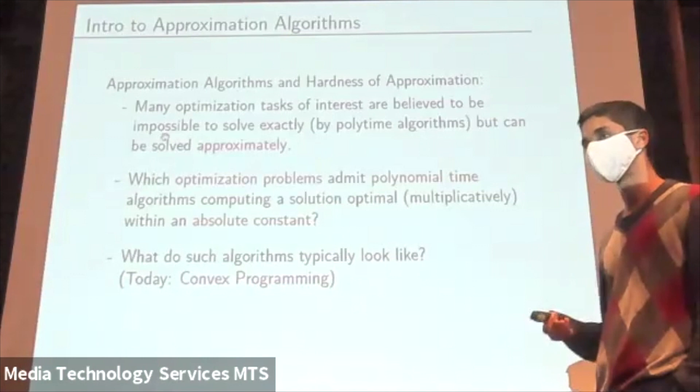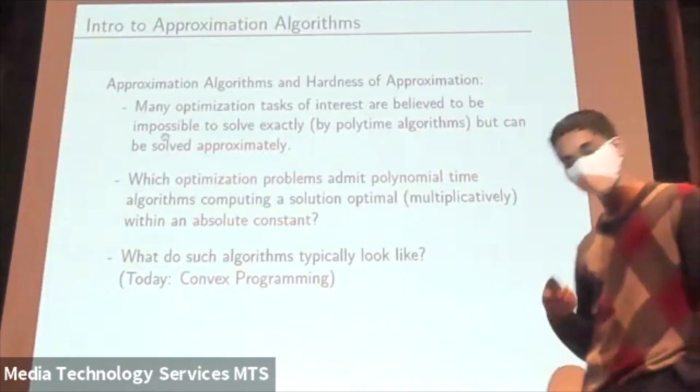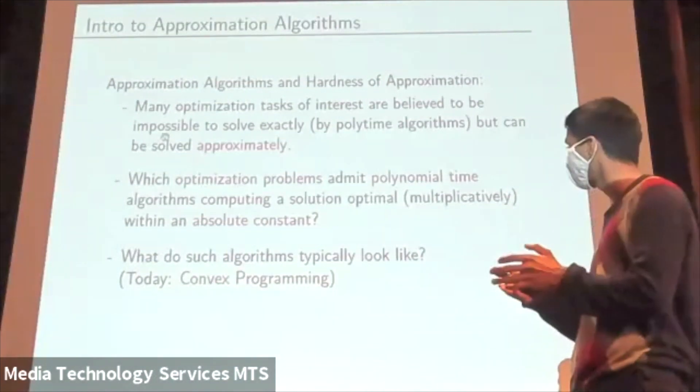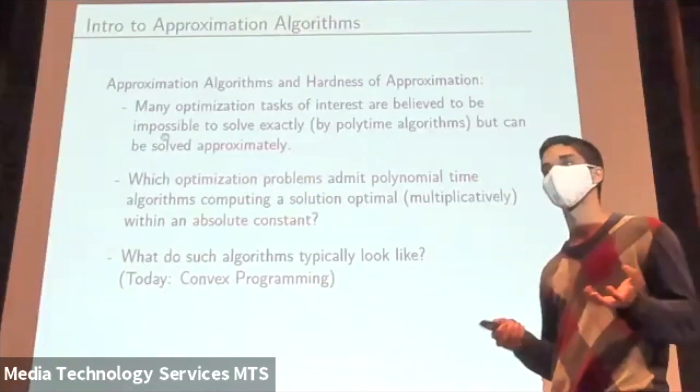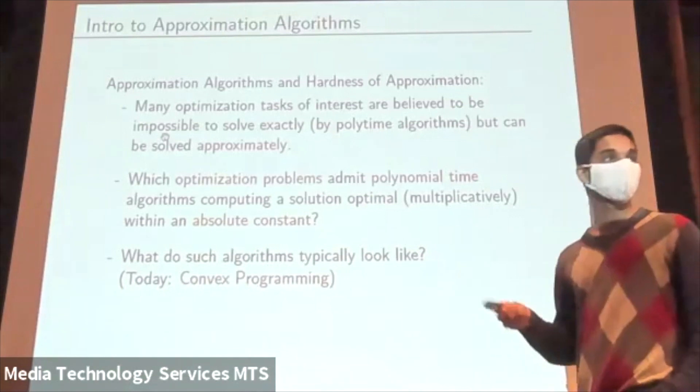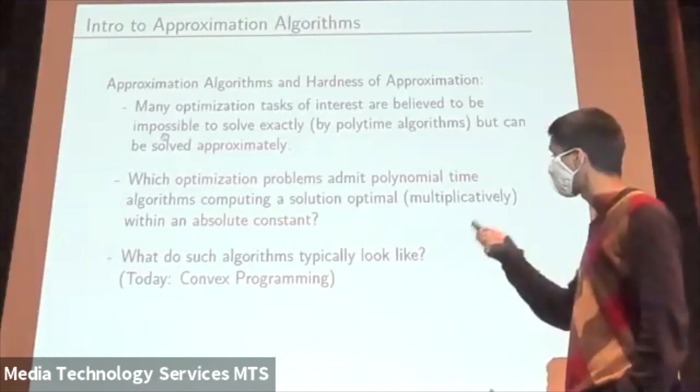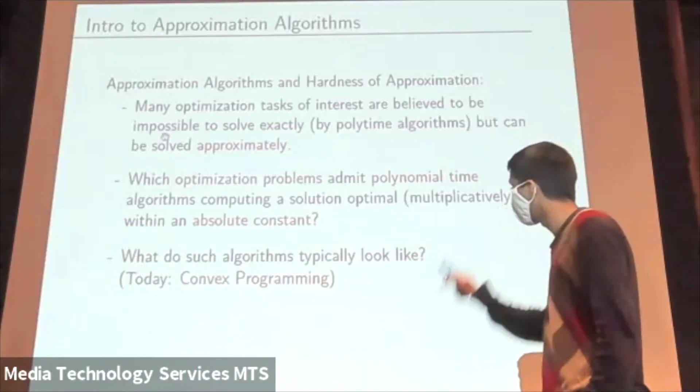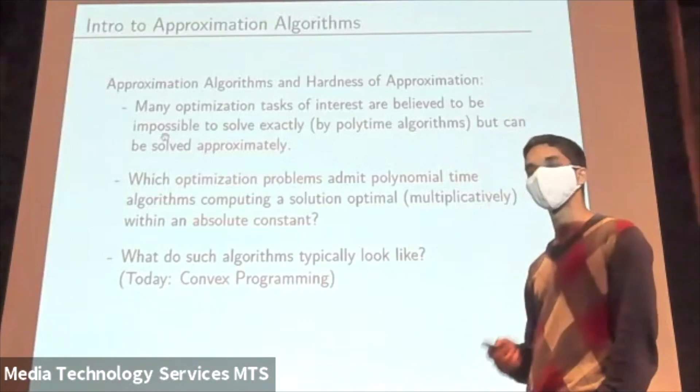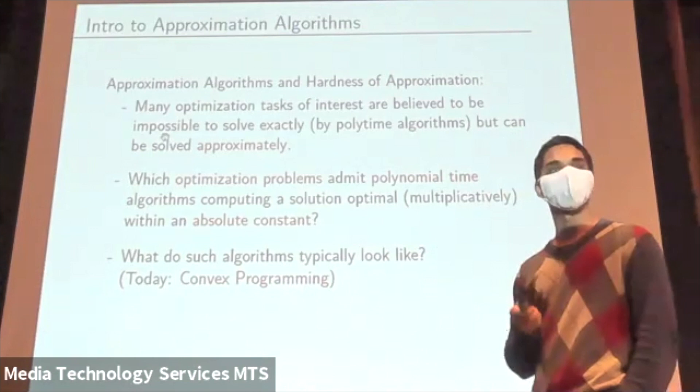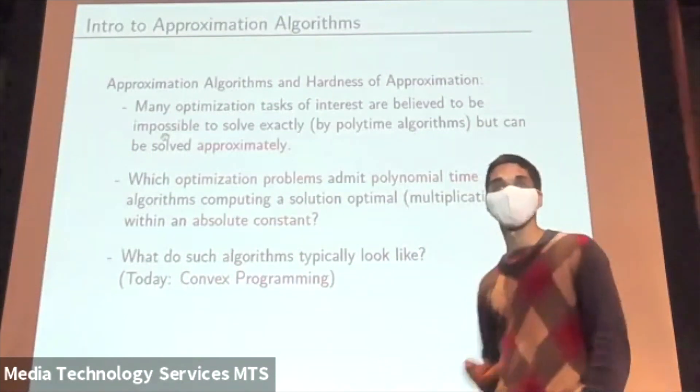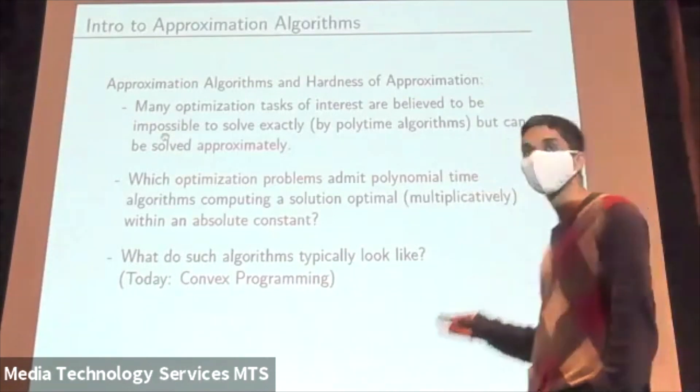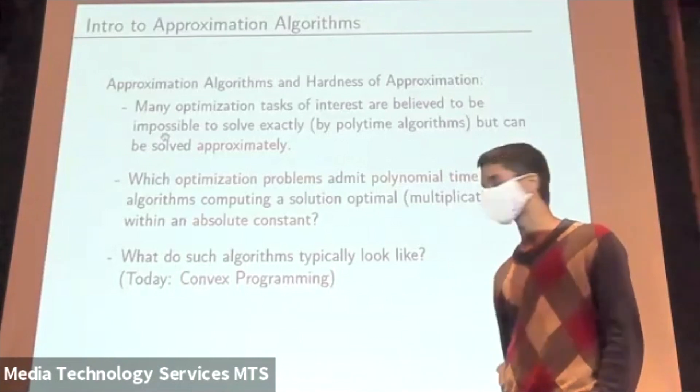What do such algorithms typically look like? A remarkable phenomenon is that there are a very small number of approximation algorithms, each of which is applicable to a diverse range of problems. The one I'll focus on today is convex programming. For the purpose of today, when I say convex programming, I refer to maximizing a linear function over a convex set, and you're given a membership oracle for the convex set. An oracle that says yes if a point is inside the set and no if it's not. An important paradigm in optimization theory is that this can be done exactly in polynomial time in the ambient dimension.